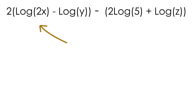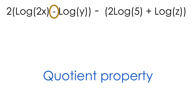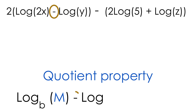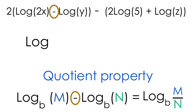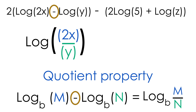Let's start with the parentheses on the left-hand side of this expression. Notice how we have a minus sign in between two logs — this is a clear indication that we need to use the quotient property. The quotient property says if we have the log of m minus the log of n, we can rewrite them as one single log of m over n. So log(2x) minus log(y) becomes log(2x/y).